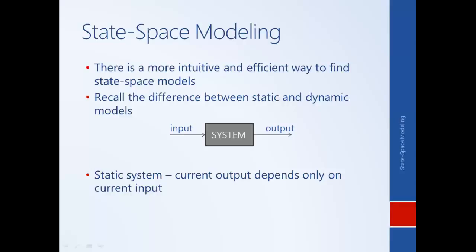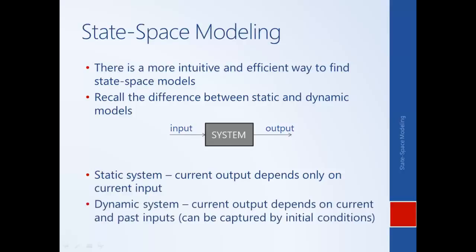Most physical systems don't behave that way. If our system is a motor and I apply five volts, that doesn't tell me what the speed of the motor is. The motor will behave differently if right before I applied five volts I was applying zero volts versus a hundred volts. That past history affects the current behavior of the system, and when I change the input to five volts the output doesn't change instantaneously — it takes time to react. There is inertia.